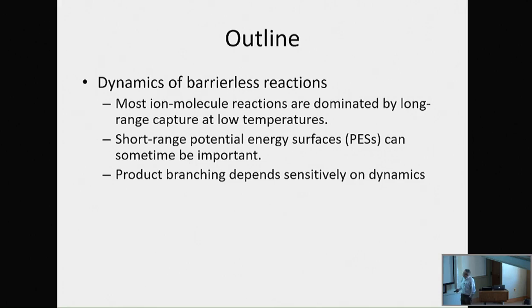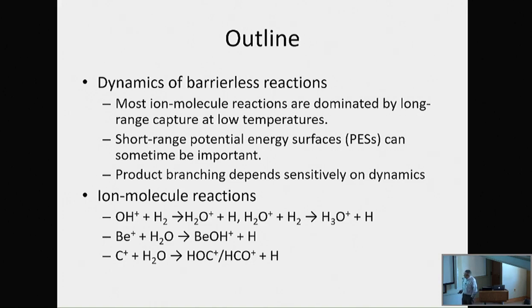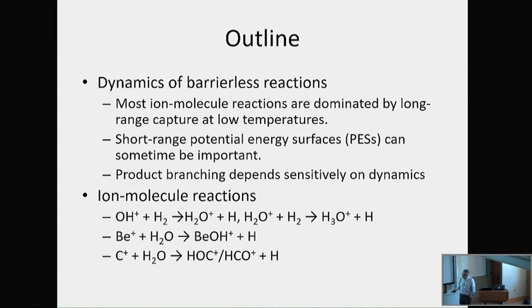I will tell you why that is important, and how it affects reactivity and branching ratio. I'm going to tell you about three reactions. The last one has a dramatic branching ratio that has to do with short-range interactions, not just long-range ones. The first reaction is the interstellar formation of water. The second involves a beryllium ion, which as some of you know is very toxic — and a nice thing about doing theory is you don't have to worry about dumping your instrument after you're done. You can replace beryllium in the cooling crystal with another ion, in this case carbon. And here's an astrochemical reaction that forms HOC+ and HCO+.